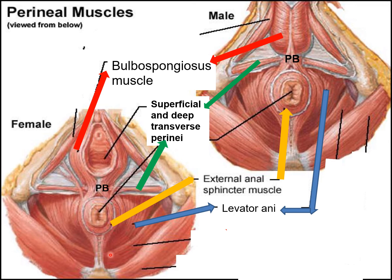The single or unpaired muscles include the external anal sphincter, seen around the anus, and the longitudinal muscle coat of the rectum and anal canal. All ten muscles interlace and join at the perineal body.